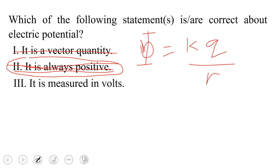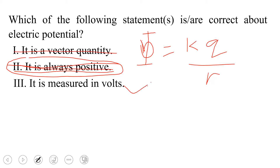And finally, statement three: it is measured in volts. Yes, it is measured in volts — that's one of the basics of electric potential. So that means that statement three is the only valid statement amongst the three.